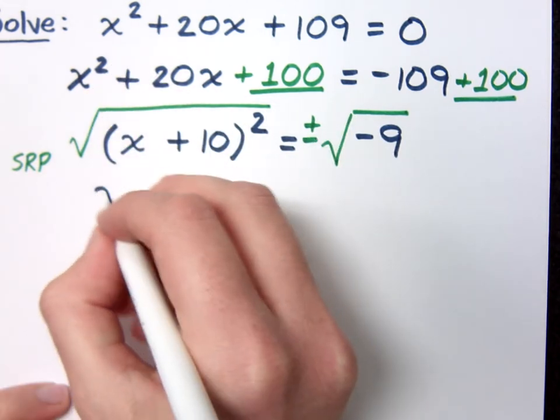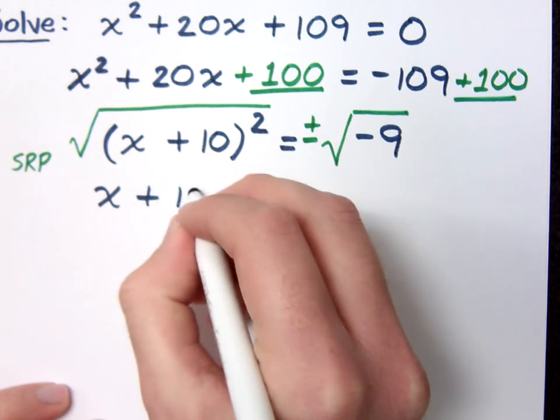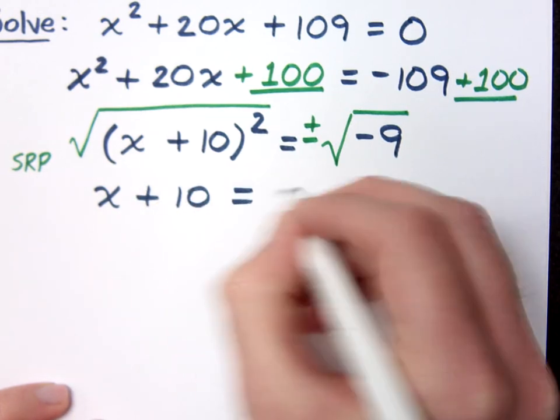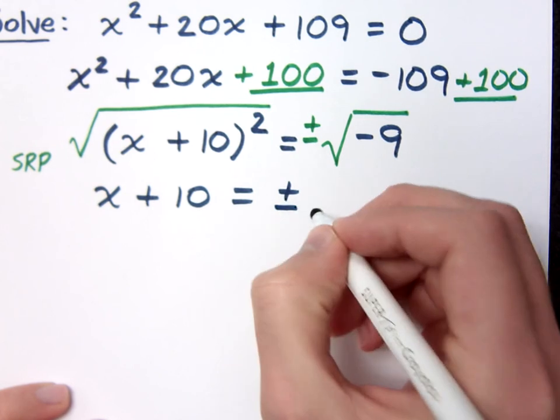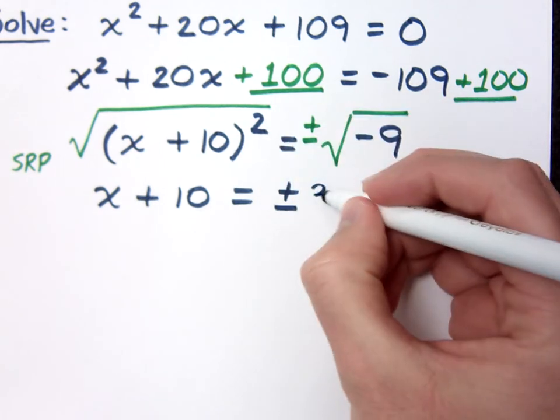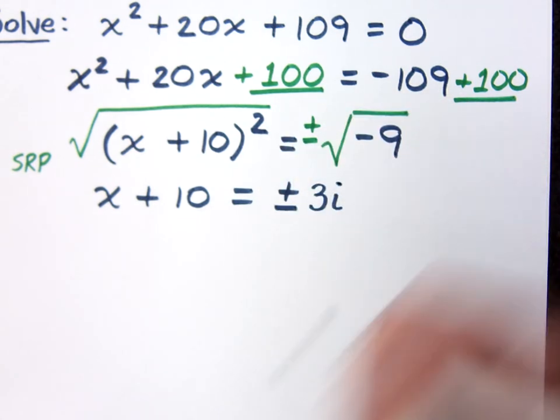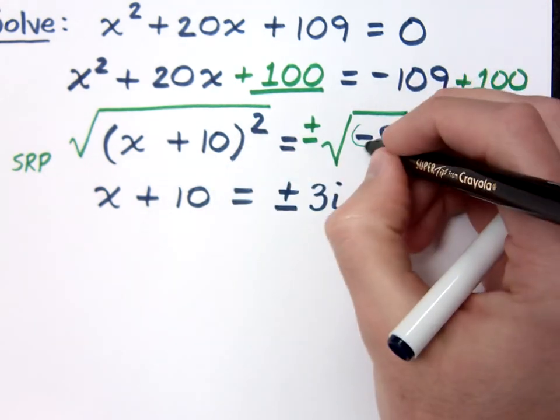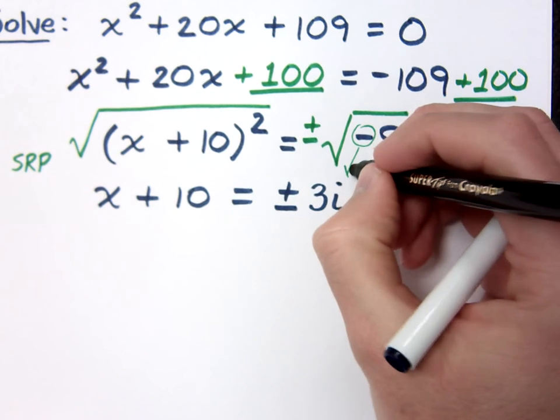So now I have what? X plus 10 equals plus or minus the square root of negative 9. But the square root of negative 9 becomes what? 3i. The square root of 9 is 3 and of course the negative factor inside is what gives me the i outside.